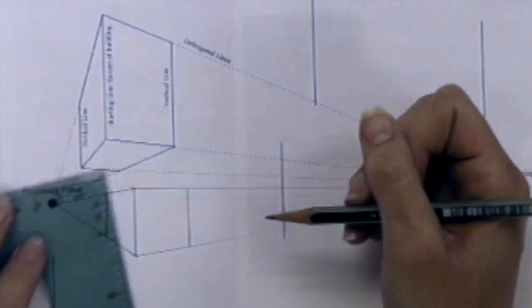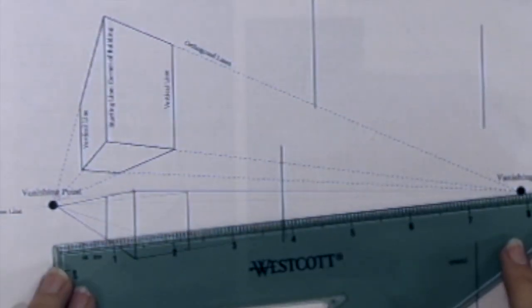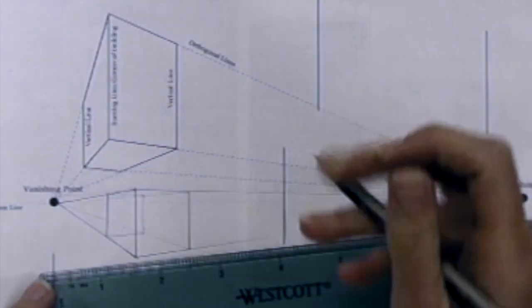Now I'm deciding how deep each of the sides of the box should be, and remember to draw it as if it were see-through, so I'm drawing some of these lines that wouldn't actually be seen if the box were solid.